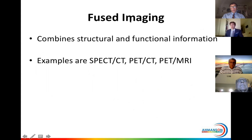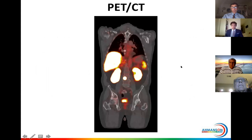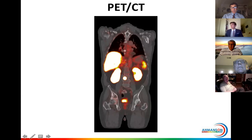Fused imaging combines structural and functional information. The modalities that use both are SPECT-CT, PET-CT, and PET-MRI. Here you can see an image of a patient where I showed the molecular information, and now we have fused this with the CT information. I can clearly localize this abnormal uptake of tracer to a vertebra in the lumbar spine. Now I have all the information I need to appropriately treat this patient.